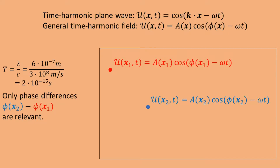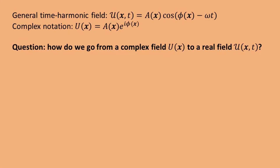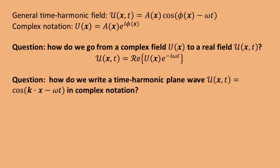So let's denote the complex field as u(x), which has a(x) as its amplitude and φ(x) as its phase. Given this definition, we can ask: how do we go from a complex field u(x) to a real field u(x, t)? The answer is that you multiply the complex field with e^(−iωt) to introduce the appropriate time dependence, after which you take the real part. Since plane waves are so important, another question you could ask is: how do you write a time harmonic plane wave in complex notation? The answer is e^(ik·x).